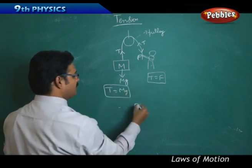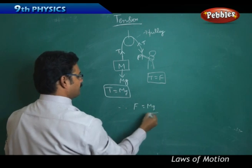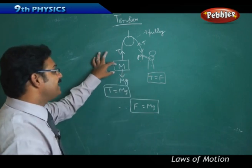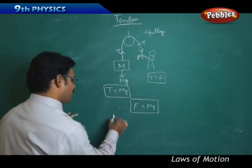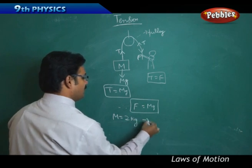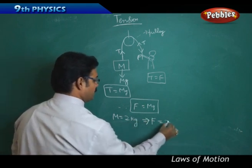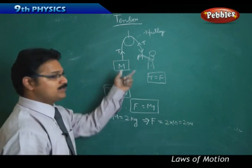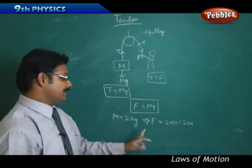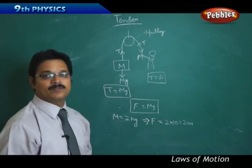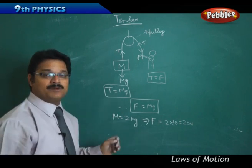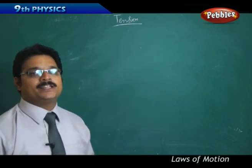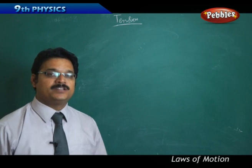Combining these two relationships, you get F equals Mg — that means you have to apply a force equal to the weight of the block. If mass equals 2 kg, the amount of force you have to apply is 2 × 10 = 20 Newton. So the minimum force required to pull this block is 20 Newton. More than 20 Newton you can apply, but the minimum is 20 Newton because F equals Mg.